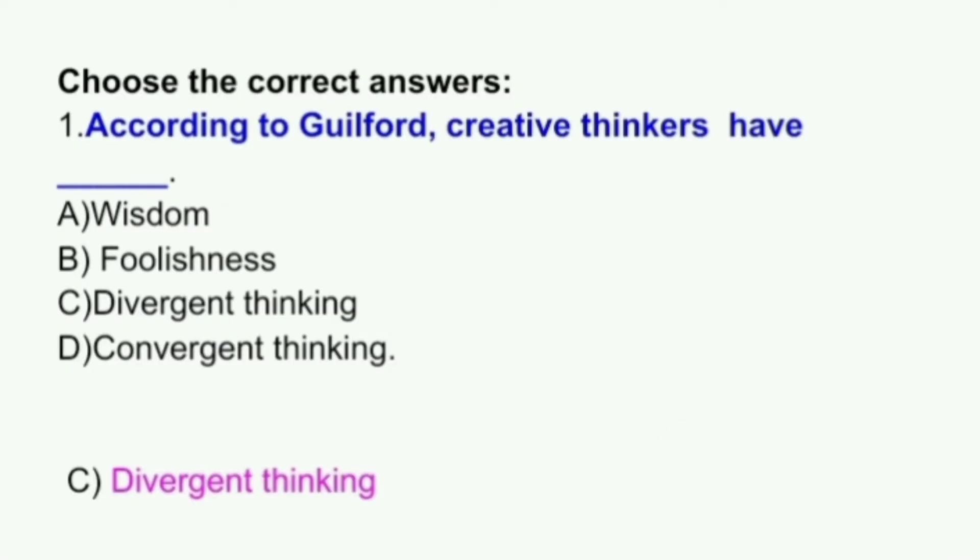According to Guilford, creative thinkers have: A) Wisdom, B) Foolishness, C) Divergent thinking, D) Convergent thinking. The answer is C, divergent thinking.